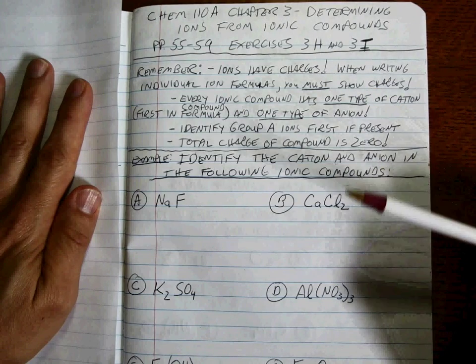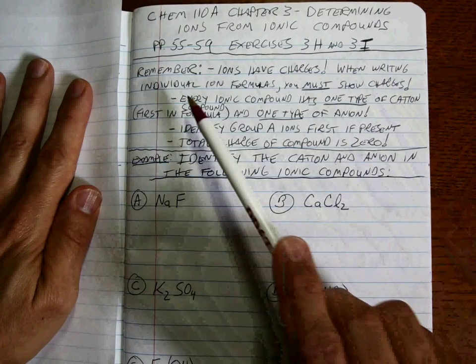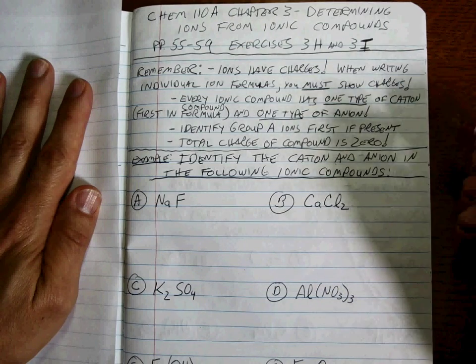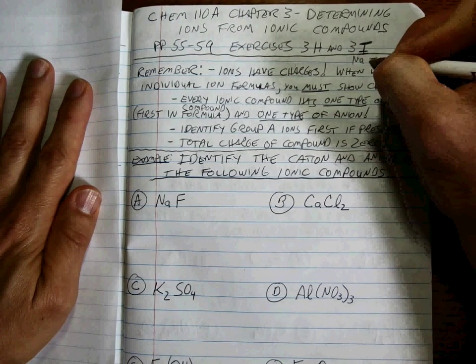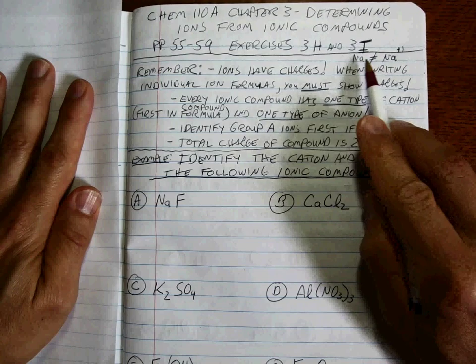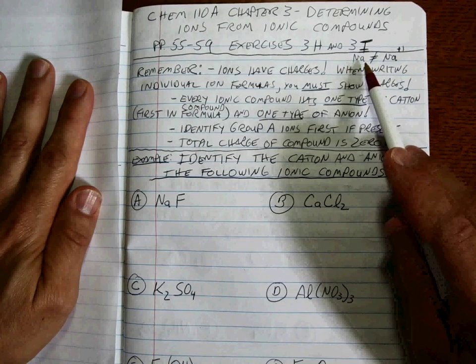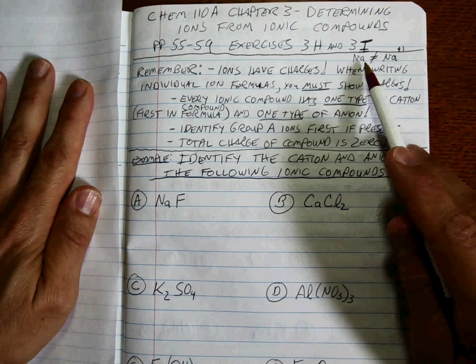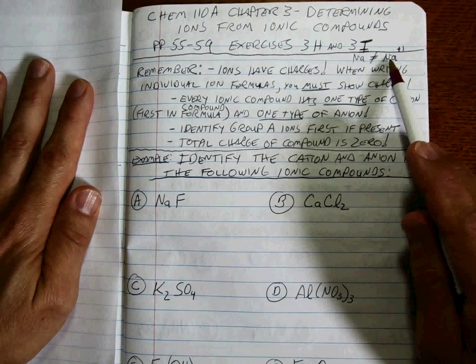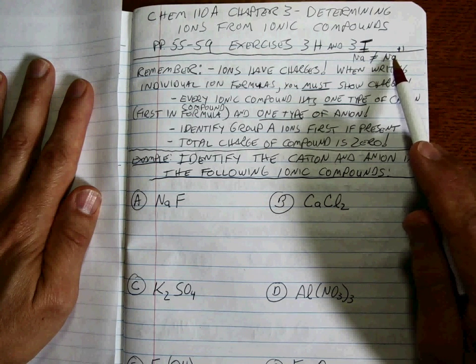So what do we have to remember here when we start to do these problems? Always remember that ions have charges. So when you write an individual ion formula, you have to show the charges on it. After all, Na is a whole lot different than Na plus 1. Very big difference. You sprinkle this in your mouth and it tastes like salt. You sprinkle this in your mouth and very bad reactions happen. That doesn't even look like that. That's a shiny metal and this is that white crystalline solid that you recognize as sodium chloride or salt.